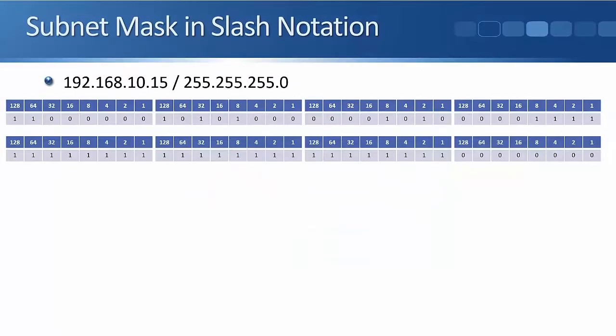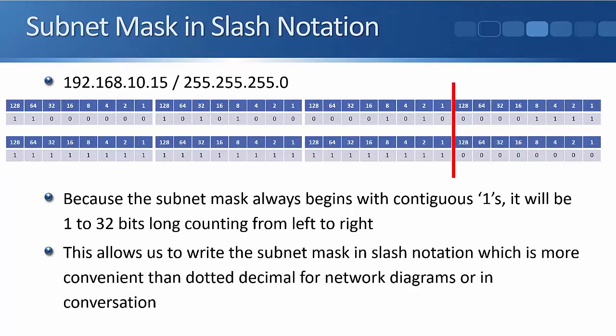We can also write the subnet mask in slash notation. 255.255.255.0 is writing it in decimal notation. The example here, 255.255.255.0, we can write that out the subnet mask and you see there is the line between the network portion and the host portion. As covered earlier, it's always contiguous ones and then followed by a block of contiguous zeros.